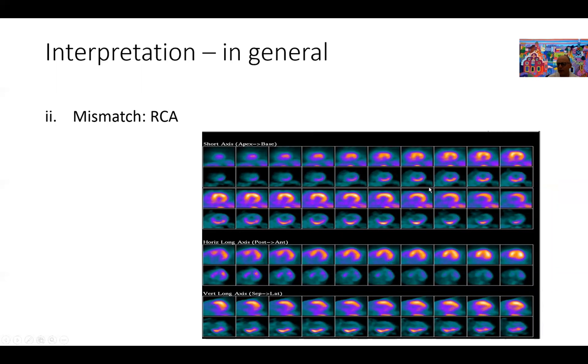Then you go next to the FDG images, and you can see here right away you have this fixed defect on the perfusion images in the inferior inferolateral wall, and that defect fills up with FDG beautifully right here. You can see right away this patient has hibernation of the entire segment that we thought was dead and scarred on the perfusion images. This is what we call a mismatch defect: you have a defect on the rest images that fills up with FDG on the metabolic images.